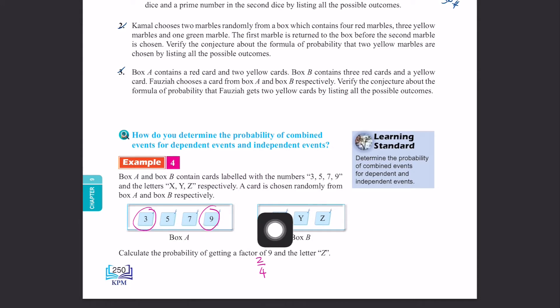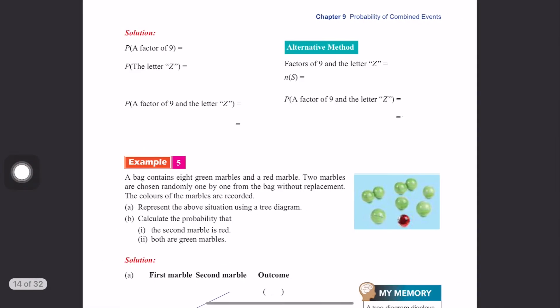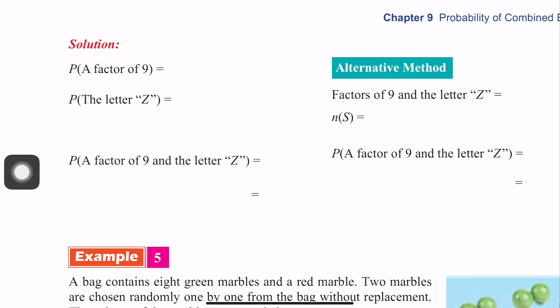Probability for box B to get Z. How many Z are there? One, right? 1 out of 3. So we write it here. Factor of 9 is 2 over 4. Factor of Z is 1 over 3. So probability of factor 9 and letter Z.